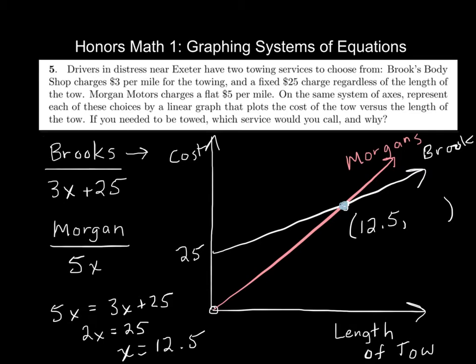And I can actually figure out what the y value is, even though I really don't need it. Because the question is, how many miles? And 12 and a half is how many miles. But the y value would give you the cost after that mile. So I might as well figure that out. If I do 12 and a half times 5, what do you get there? 62.5. So this would be 62.5. So that means, after 12 and a half miles, both of these services cost the same amount.